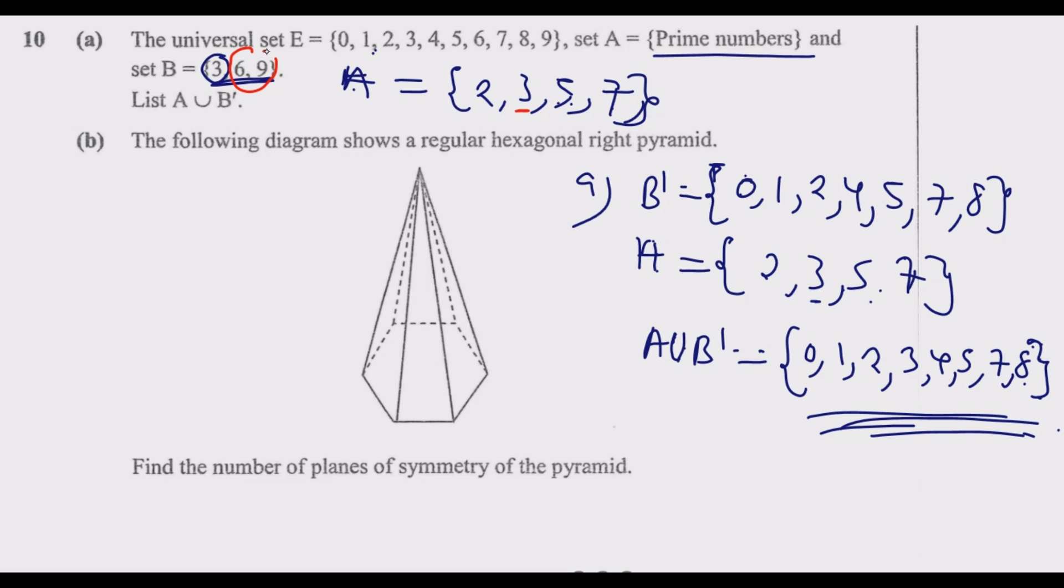We have taken them because they are appearing. We were looking for B complement. Number B: the following diagram shows a regular hexagonal right pyramid. Find the number of planes of symmetry of the pyramid.